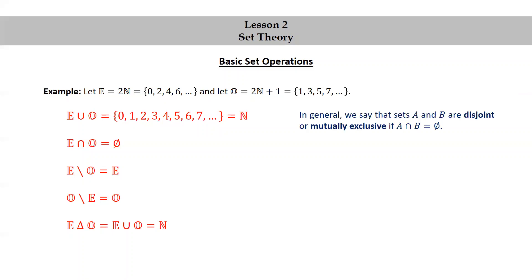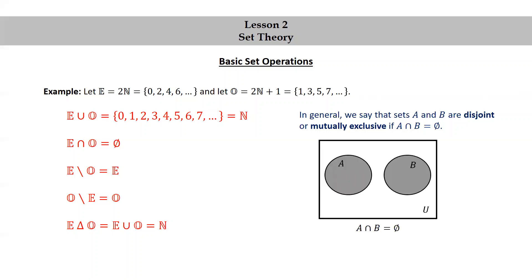In general, we say that sets A and B are disjoint or mutually exclusive if the intersection of A and B is the empty set. Here's a Venn diagram illustrating disjoint sets A and B — notice how they're not touching each other. For example, 𝔼 = {2n} and 𝕆 = {2n+1} are disjoint, as the even natural numbers and the odd natural numbers have nothing in common. Therefore, they are disjoint or mutually exclusive.